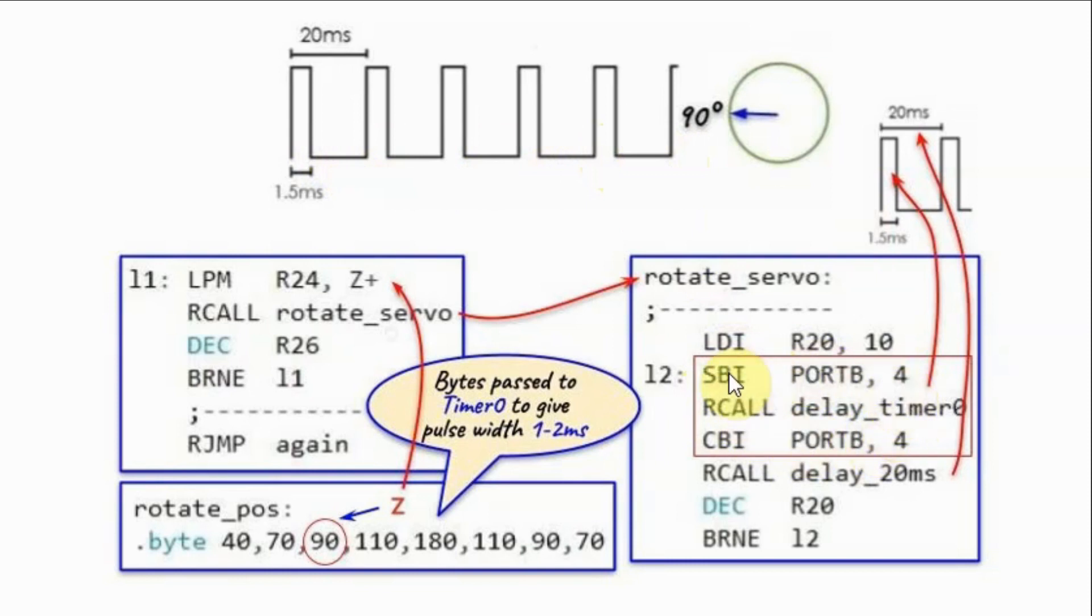And in this subroutine, we want to simulate or generate this pulse width modulated signal. So first, we will generate one period. First, we will generate the pulse width of 1.5 millisecond, which is output at port PB4. And of course, timer 0 is used to give us the delay of 1.5 millisecond using this byte value 90. After the pulse is generated, we want to add the period 20 milliseconds, so we call the subroutine delay 20 milliseconds. And now we have one complete cycle. We repeat this several times in this example 10 times in order to generate the waveform needed to stabilize the servo at position 90 degrees.